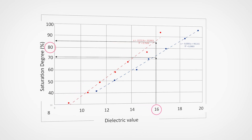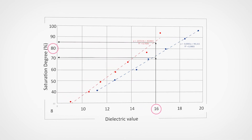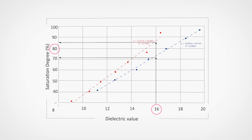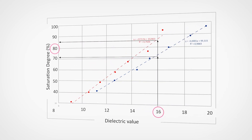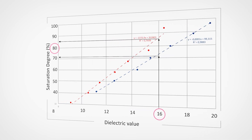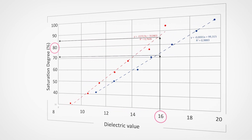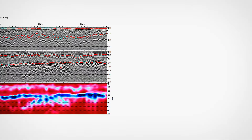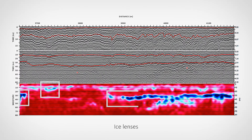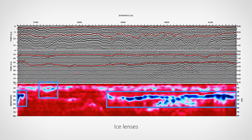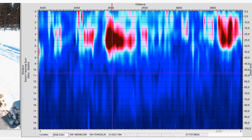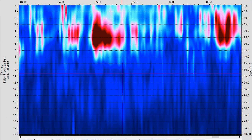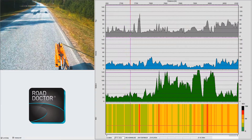Road Scanners has developed a promising ground penetrating radar based moisture damage index. This technique is based on the moisture susceptibility of the material and the fact that GPR frequency response changes as a function of volumetric moisture content. In cold climate areas, this technique shows unfrozen water content in frozen structures, which is critical in the formation of segregation ice lenses and frost heave.